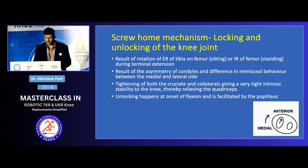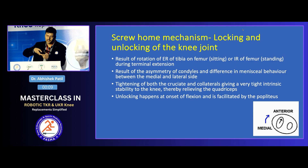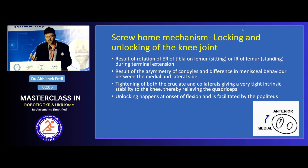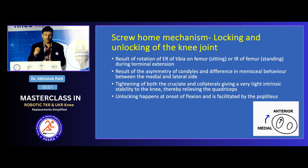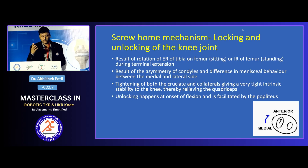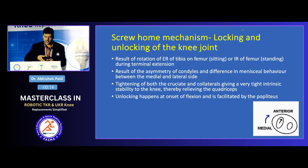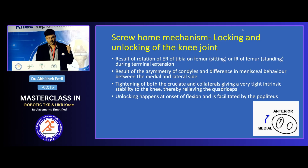There is also something called the screw home mechanism. In the terminal 5 to 10 degrees of extension, there is a relative rotation between the femur and the tibia. This rotation tightens the cruciates and collaterals, increasing the stability of the knee. That is important because it offloads the quadriceps — when standing for a long time in extension, the quadriceps don't have to fire repeatedly because the knee is locked, preventing early quadriceps fatigue.